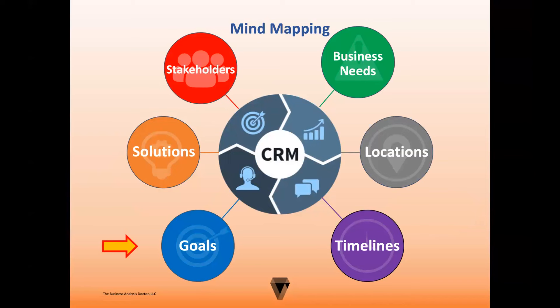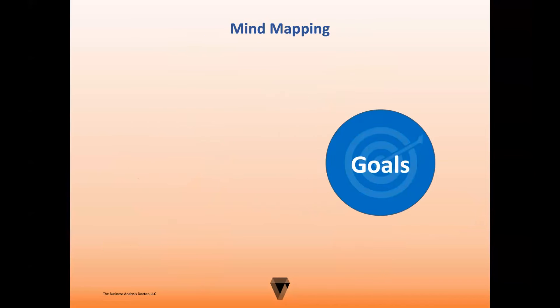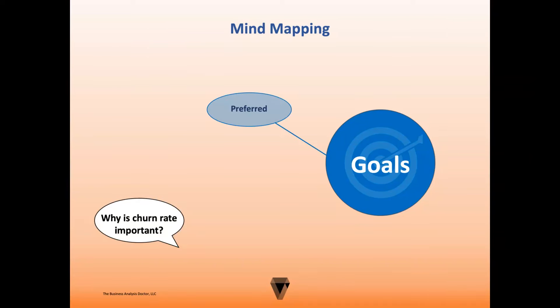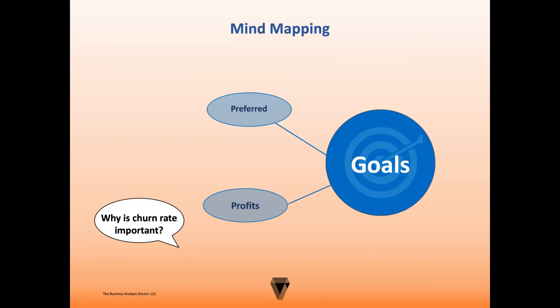Next up is the goals node. Since this node investigates why we're doing the project, you'll likely ask questions like, 'Why do we need this change?' Based on the business problem of having a low customer satisfaction rating, the new CRM would help the mortgage company become a preferred lender. You may also need to know why the churn rate is important, since it's also one of the problems discussed. You'll probably find that reducing customer churn rates results in an increase in customer retention, which would ultimately increase profits.